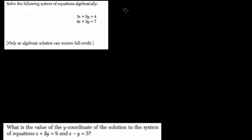Okay, solve this following system algebraically. They give you these two linear equations: 3x plus 2y equals 4, and 4x plus 3y equals 7. I think the easiest way to solve this is to look at your coefficients.